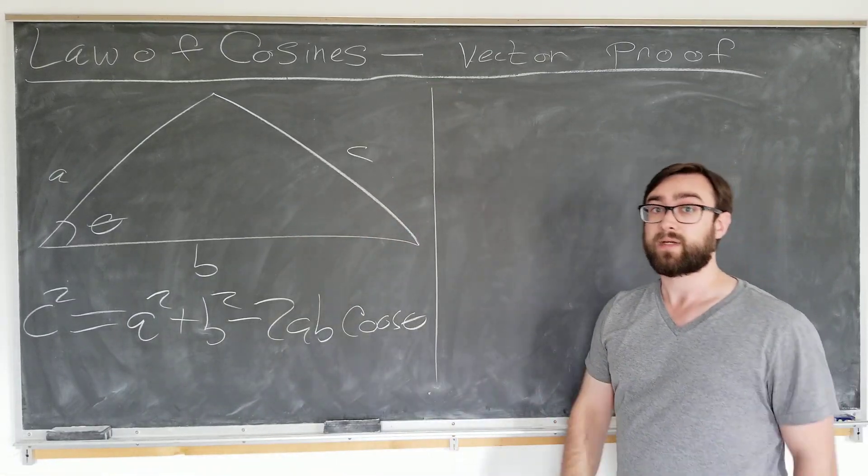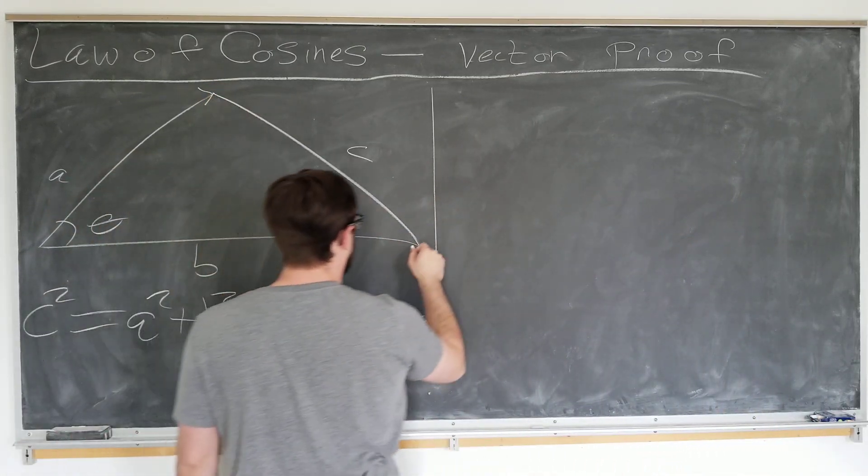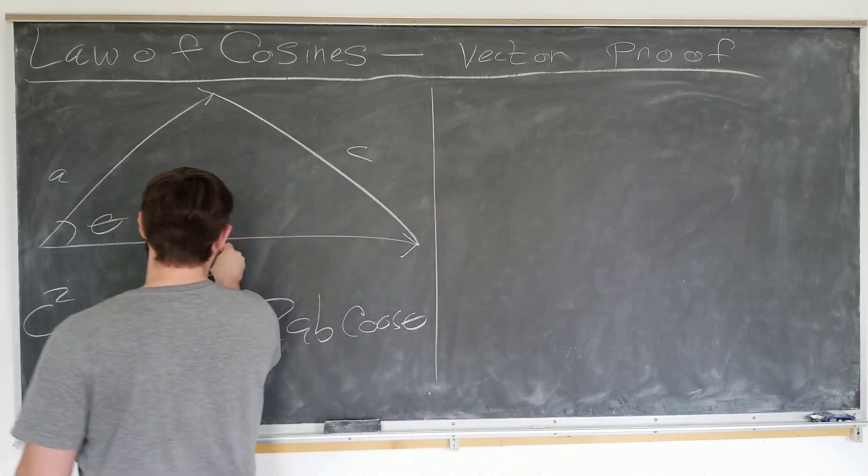We'll demonstrate this using vectors by first writing the triangle as a vector, starting from the origin. a is a vector, b is a vector, and let's see how we can write c as a vector.